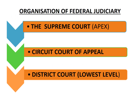As far as the organization of the federal judiciary is concerned, we have the District Court at the lowest level, then the Circuit Court of Appeal, and at the highest level the Supreme Court, which is the Apex Court of the Federal Judicial System. Any appeal from the decision of a District Court can lie to the Circuit Court of Appeal, and any dissatisfaction with the verdict of the Circuit Court of Appeal can be taken to the Supreme Court of the United States of America.